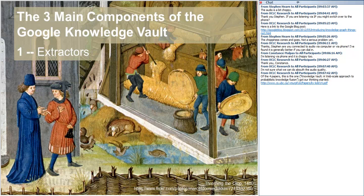Now I'll wade into a brief description of the Google Knowledge Vault work. There are three main components. The first is extractors. Google crawls many different sources on the web, and these extractor systems extract triples from a huge number of web sources. For each extractor, they assign a confidence score to the extracted triple, representing the uncertainty about the identity of the relation and its corresponding argument — giving a sense of how much confidence they have in the trustworthiness of the factual claim.